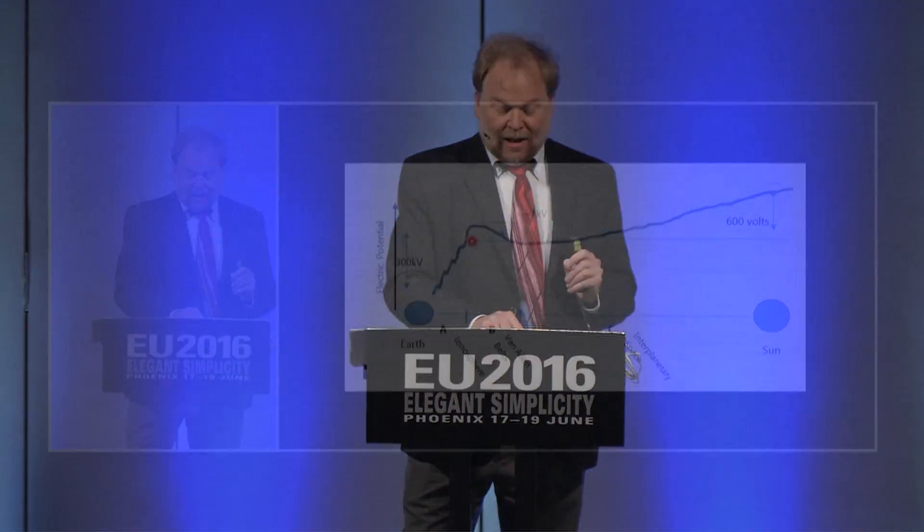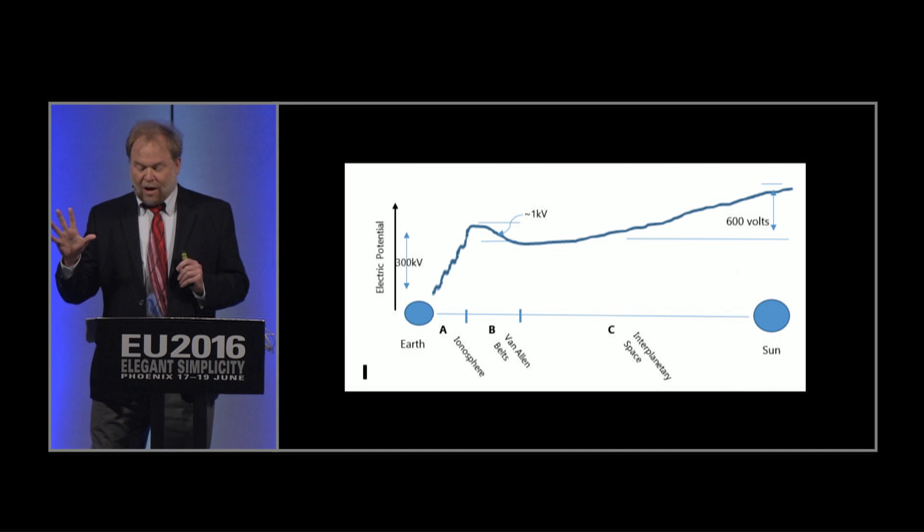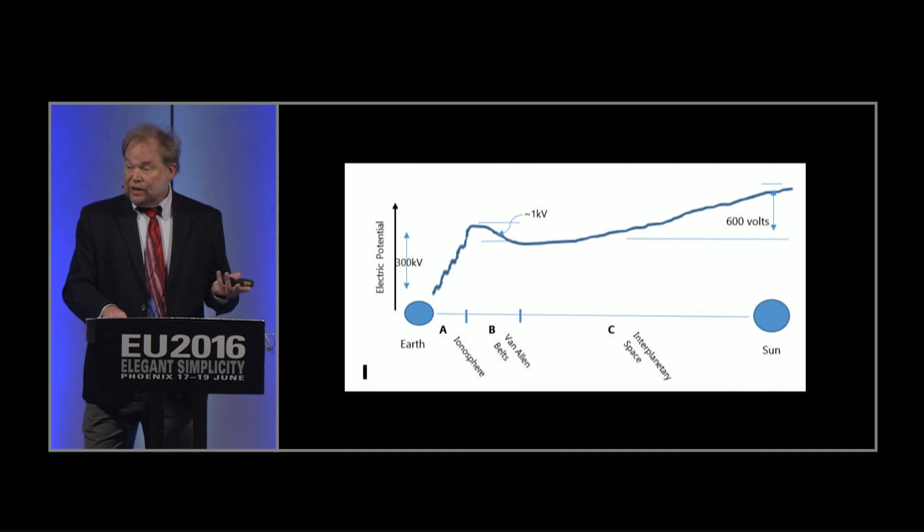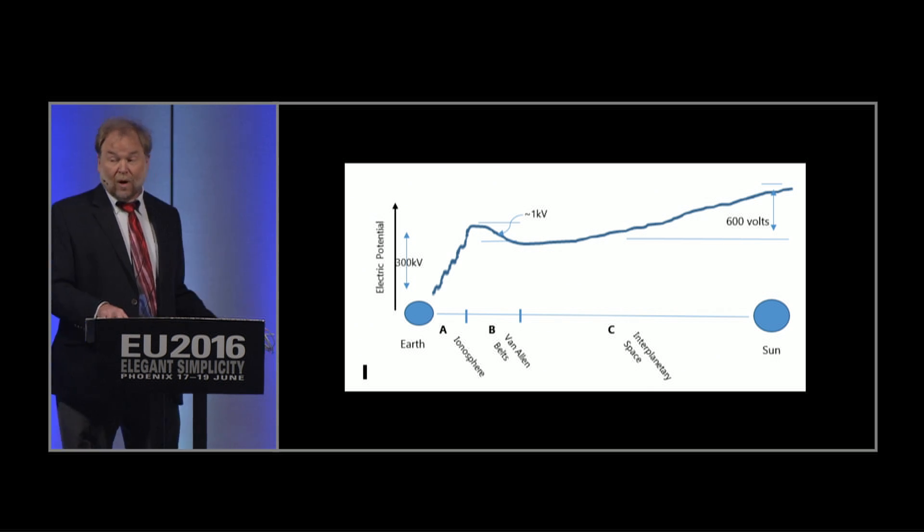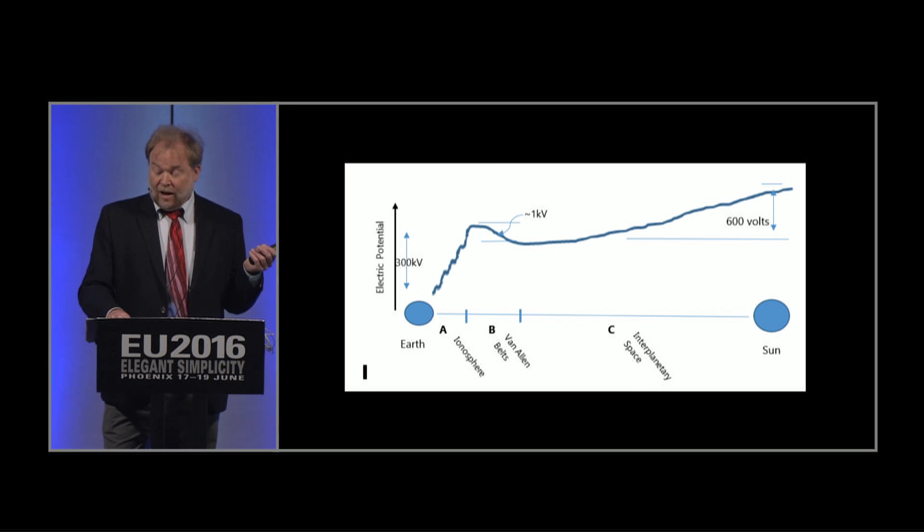So the first, on the, here, leaving the planet, that quick rise off of the planet, we actually do see that. There's plenty of data for that. It's called the fair weather potential. There's various explanations in the literature as to why that is there. Almost all of those explanations say that that big increase of voltage is caused by lightning on Earth.